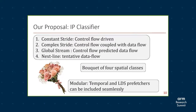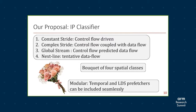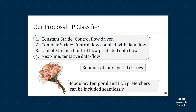Instead of proposing a new prefetcher, we propose an IP classifier that classifies an IP into four classes: constant stride, complex stride, global stream, and where none of those work, we classify the IP as unclassified and go for a simple next-line prefetcher. This collection of four classes creates a prefetcher that works on four different access patterns like strides, complex strides, and global streams. In future, more features can be added on top of this IP classifier for better temporal prefetching or for graph applications or pointer-chasing applications.